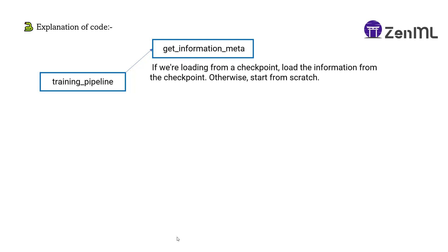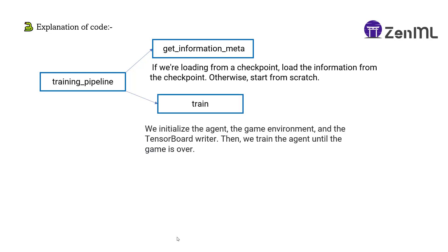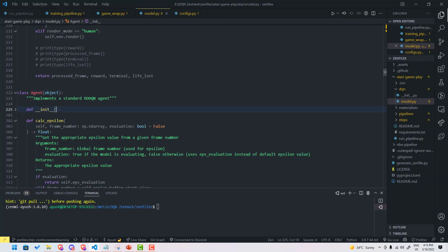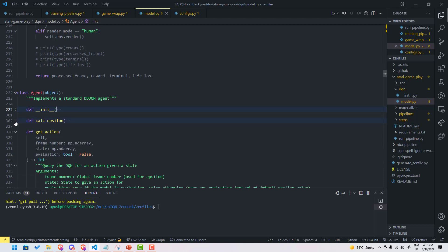Let's look at the last step, which is the training loop. This training loop initializes the agent and the game environment and the TensorBoard writer — we are using TensorBoard to see how our agent is learning. Further on, we train the agent until the game is over. You can use the config.py to tune the hyperparameters.